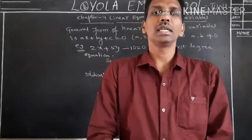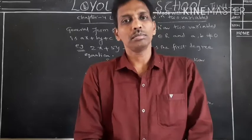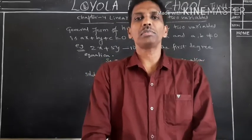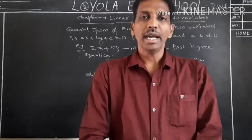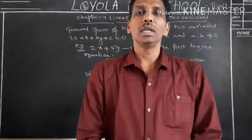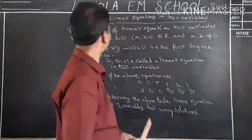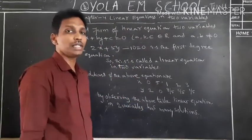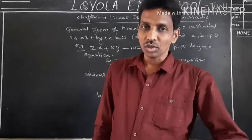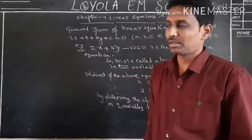Until yesterday, we might have discussed about the first three chapters from Maths Paper 1. The first chapter is Real Numbers, the second one is Sets, and the third chapter is Polynomials. Today we are going to discuss about the fourth chapter: Linear Equations in Two Variables. Let us see the introduction.